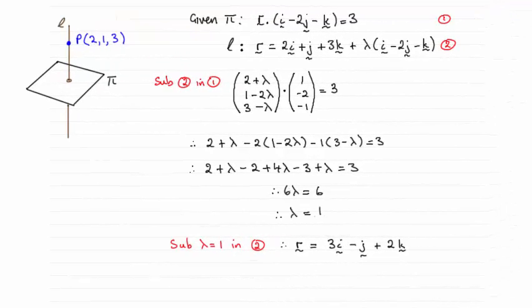Hi there. Now, the position vector of the point of intersection of the line with the plane π is given as r equals 3i minus j plus 2k.